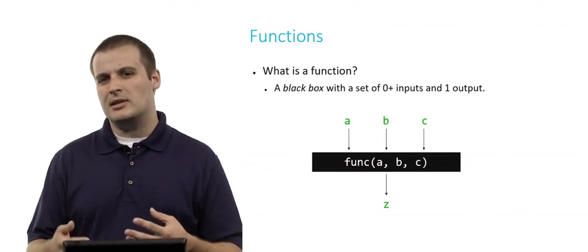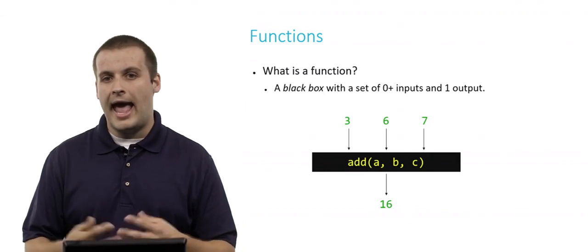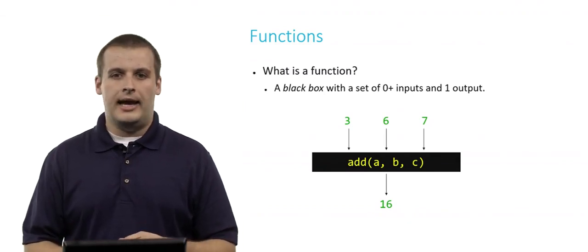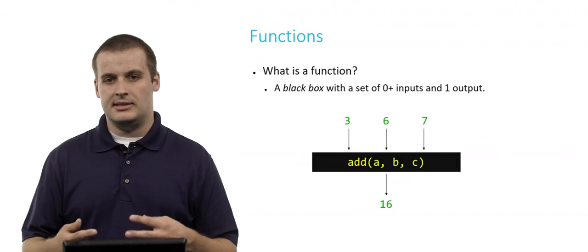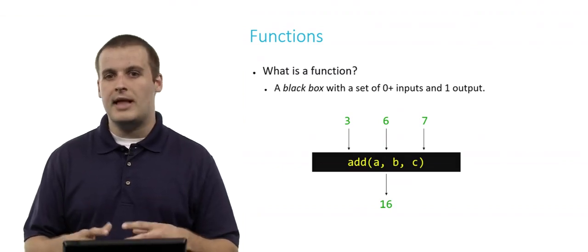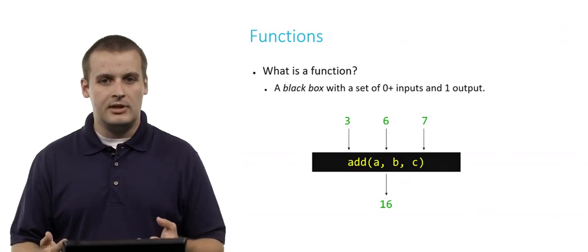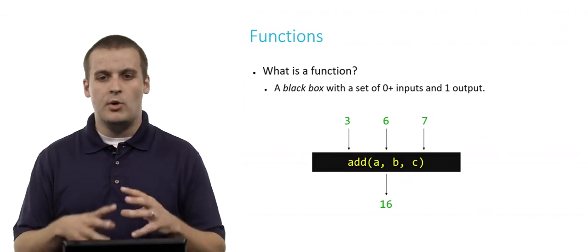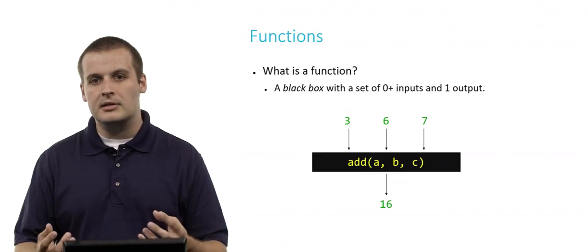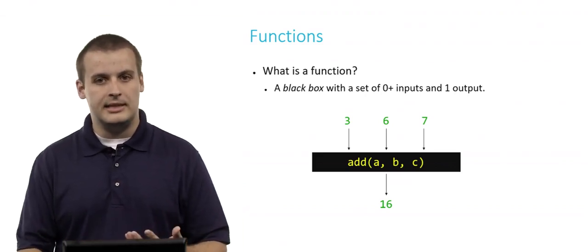To make it a little less abstract, we could say we have a function called 'add' that takes three inputs a, b, and c, and processes them inside the black box to produce a single output. So if 'add' takes three, six, and seven, somewhere inside the add function we would expect them to be added together to produce the output, which is three plus six plus seven, or 16.